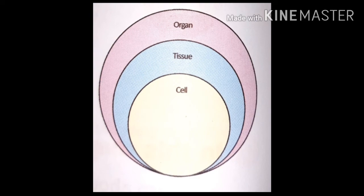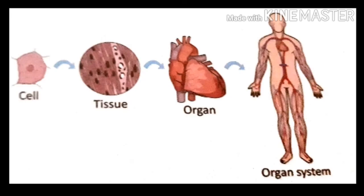Children, let us recall: cell makes a tissue, and tissue makes an organ. Cells of the same kind together make up a tissue. Different types of cells make up different kinds of tissues. Different types of tissues group together to make up organs of the body. Our heart, lungs, and brain are some of the internal organs, and each of these is made up of different types of tissues.